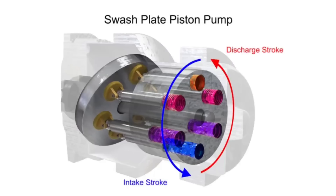Piston pumps in general are manufactured with closer internal fits than other pumps. This means that internal slippage can be less, so they operate with reasonable efficiency at pressures both too high or too low for the operation of other pumps.